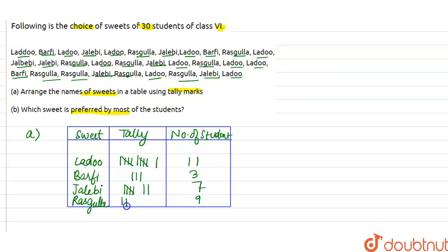Now second part of the question, it is asked that which sweet is preferred by most of the students. So after observing this table, we can say that 11 people like Laddu which is the most preferred.